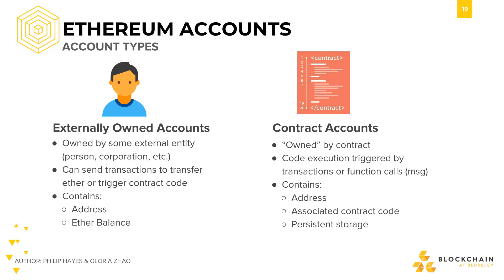In Ethereum, there are two types of accounts: externally owned accounts and contract accounts. Externally owned accounts are, as their name implies, owned by some external entity outside of the Ethereum network. This could be a person, group of people, a corporation, or something else. Externally owned accounts contain an address that they use to let people send them Ether, and also a balance of Ether. This type of account can send transactions to transfer Ether or to trigger contract code, which lives in contract accounts.